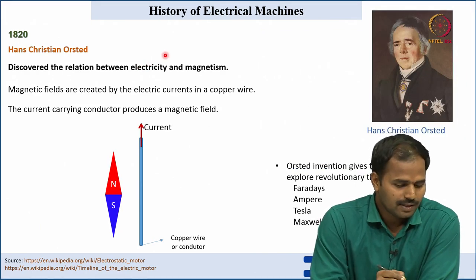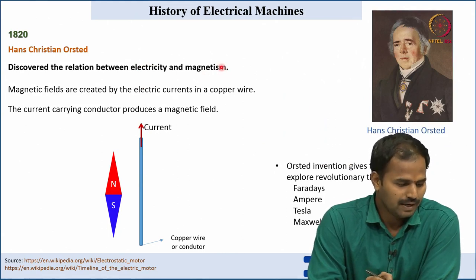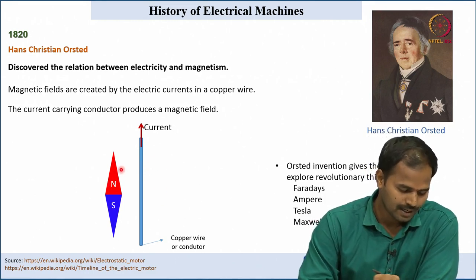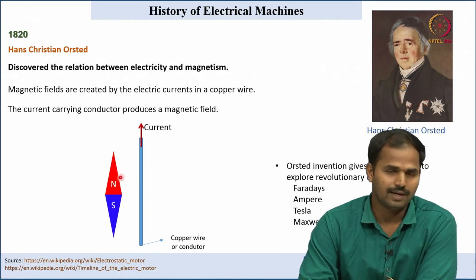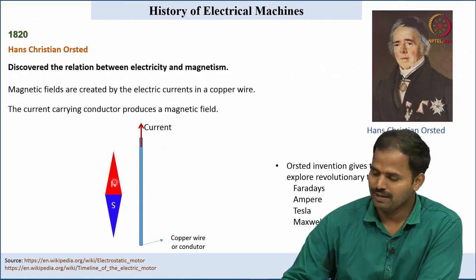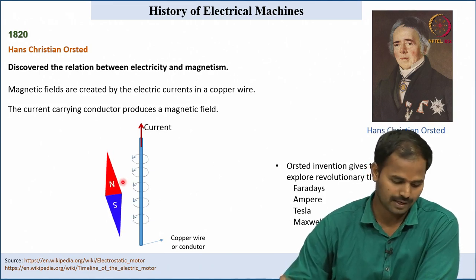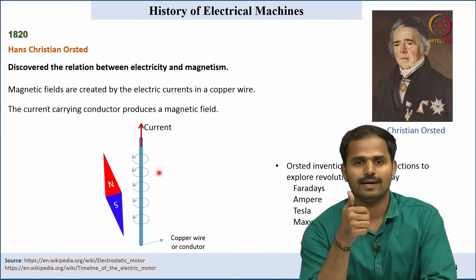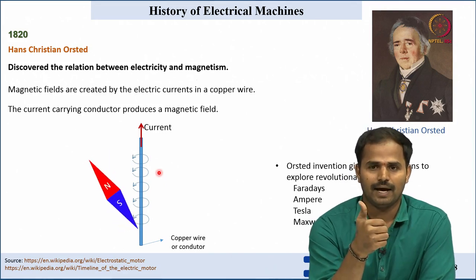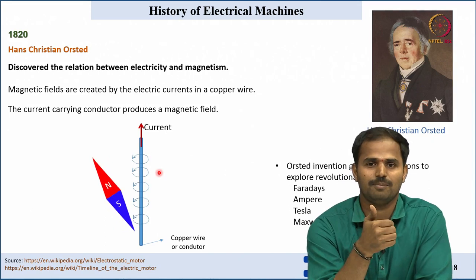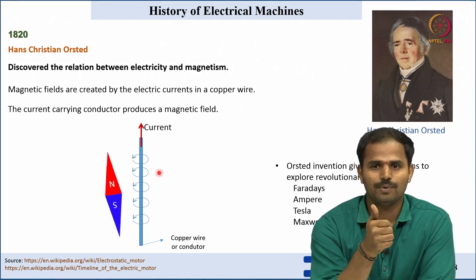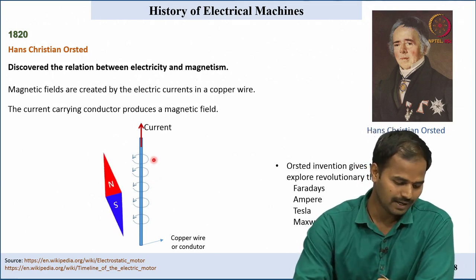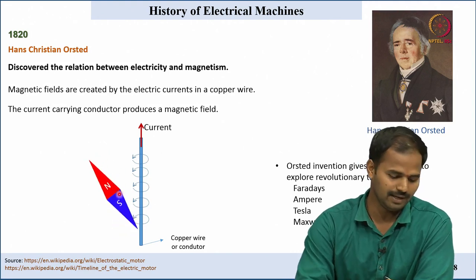Christian Oersted discovered the relation between electricity and magnetism in 1820. He did an experiment with a current-carrying conductor and magnetic needles, and observed the deflection in the magnetic needle when current flows through the conductor, as shown in this animation. As per the thumb rule, the thumb represents the current and the fingers represent the magnetic fields, so using the thumb rule or corkscrew rule we can identify the flux directions.